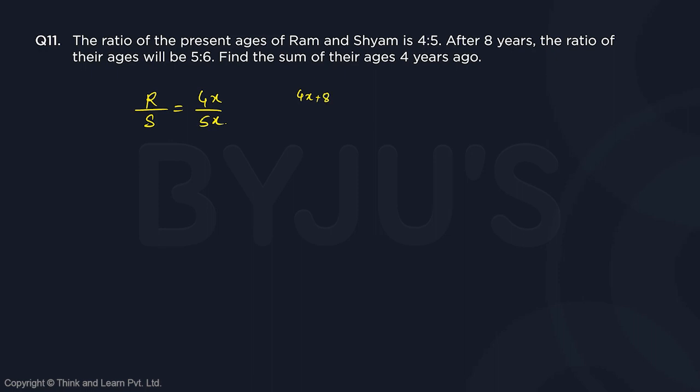It becomes 4x plus 8 and 5x plus 8, and this new ratio is 5 by 6. That's it. So you have to cross multiply and get the value of your x. So 24x plus 48 is equal...